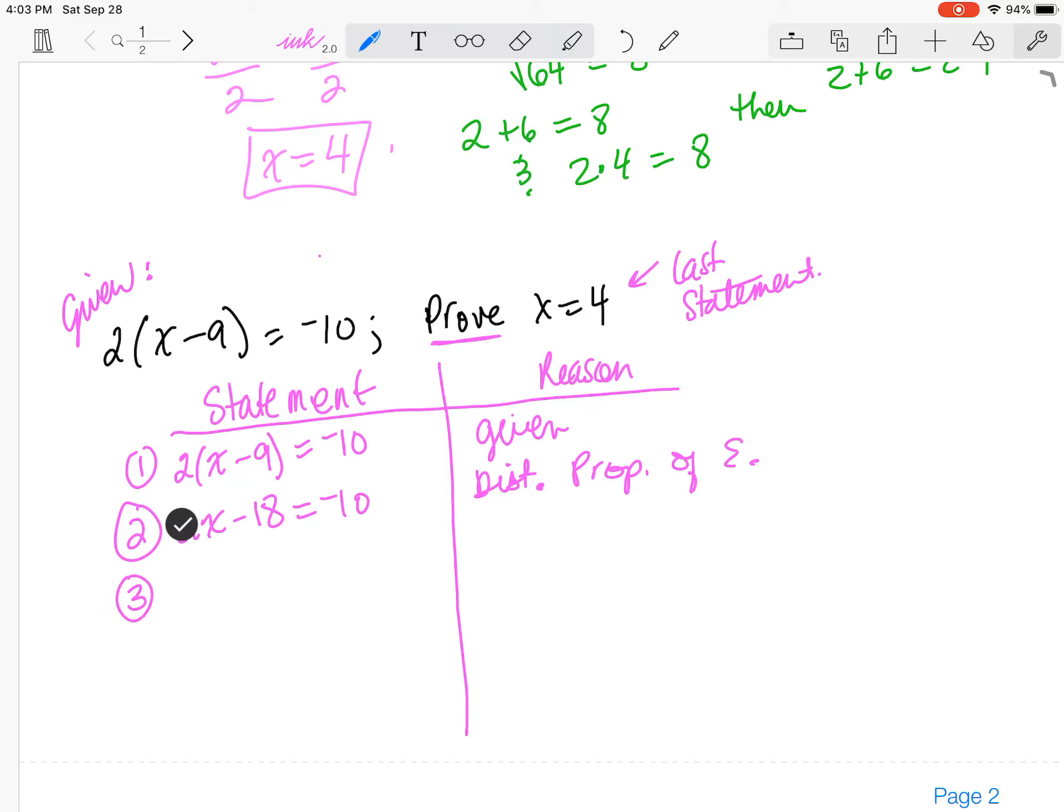Now, my next step would be to add the 18 to both sides. Now, I could have also, in step one, divided by two, but really they're mostly looking for the distribution property.